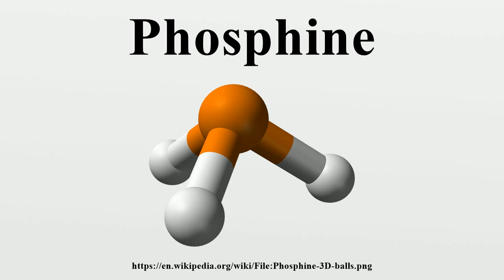With traces of P2H4 present, PH3 is spontaneously flammable in air, burning with a luminous flame. Phosphines are also a group of organophosphorus compounds with the formula R3P. Organophosphines are important in catalysts where they complex to various metal ions. Complexes derived from a chiral phosphine can catalyze reactions to give chiral- and anti-enriched products.